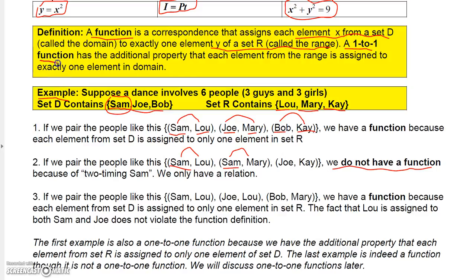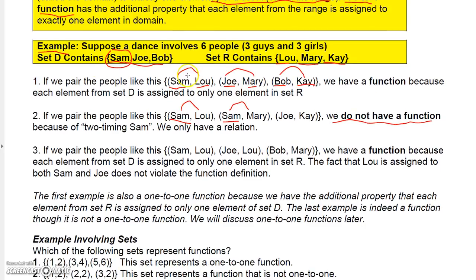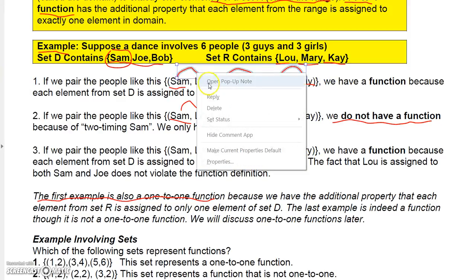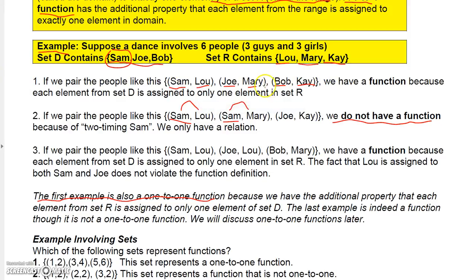A one-to-one function has the additional property that each element from the range is assigned to only one element in the domain. The first dance example is a one-to-one function: Sam is only assigned to Lou, Joe to Mary, Bob to Kay — and going the other way, Lou is only assigned to Sam, Mary only to Joe, and Kay only to Bob.